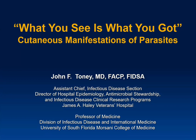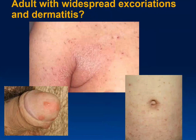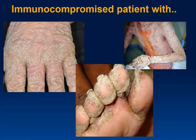What we're going to look at is cutaneous manifestations of parasitoses. Here is a child who has some pruritic papules, and you can see where they're located, which may give you a hint. This is an adult who has widespread excoriations and a dermatitis in some interesting areas. Immunocompromised patients present differently. What's going on with these different manifestations of the same illness?